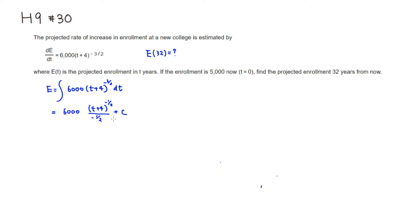Let's clean this up a little bit. This is going to be negative because there's a negative sign here, and then we have 6,000 divided by 1 half, which is the same as multiply by 2, so it's going to be 12,000. Then we have T plus 4 raised to the negative 1 half power, plus some constant C.